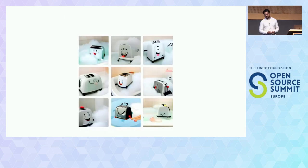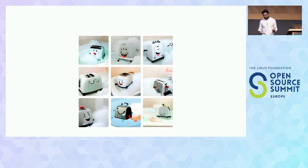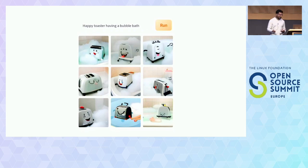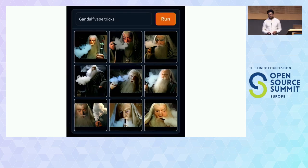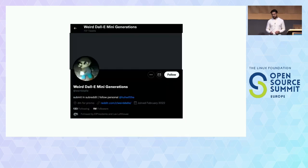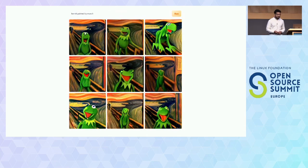How about this? It's a toaster in a bath — not just any toaster, it's a happy toaster in a bath. We've also got Gandalf doing some vape tricks. If you want to check some of these out, DALL-E Mini generates that. One last one: this is Kermit painted by Edvard Munch — you know, the person who sketched The Scream. You can see this is quite good.